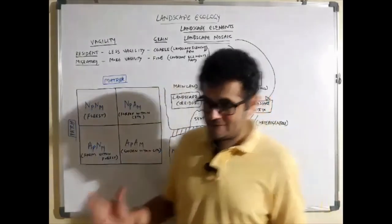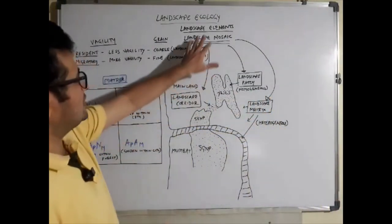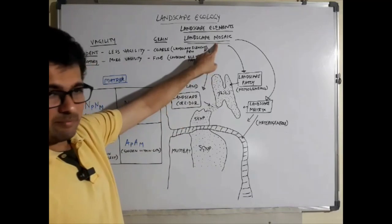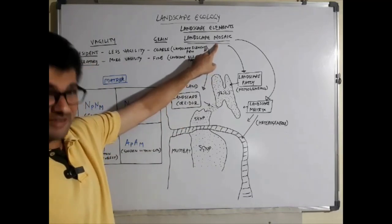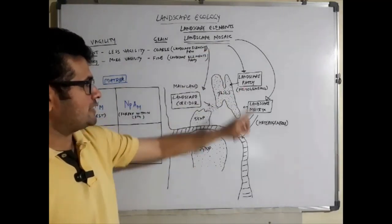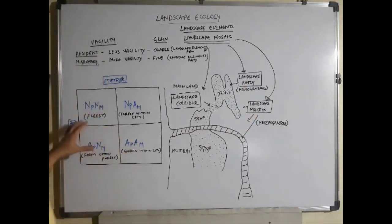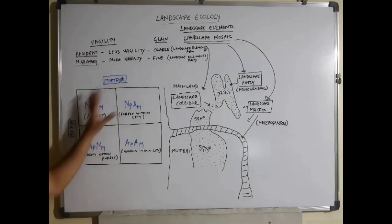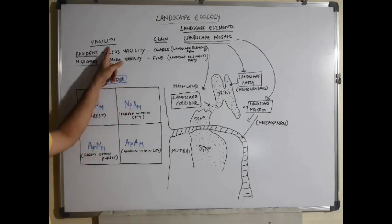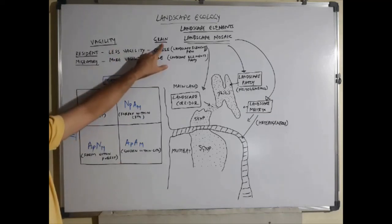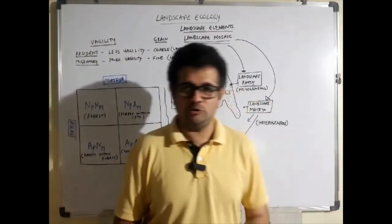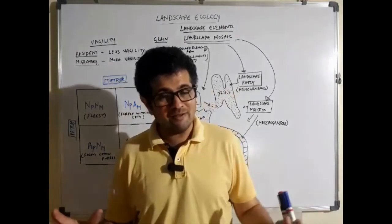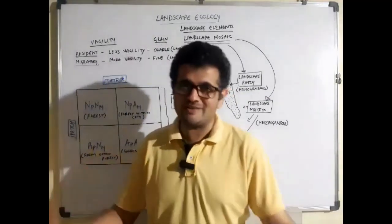To summarize, we have seen different landscape elements, the major one being landscape mosaic. Under that we get corridor, patch, and matrix. We have also seen the composite of patch and matrix proposed by Barrett and Barrett, as well as vagility — the ability of an animal to move — and the concept of grain. These are all the concepts for this lecture; see you next time.